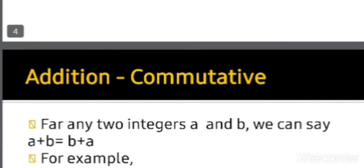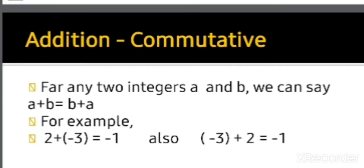Now commutative property. For any two integers a and b, a plus b equals b plus a. For example, let a equal 2 and b equal minus 3. Then a plus b equals minus 1, and b plus a, which is minus 3 plus 2, also equals minus 1. Since both give the same answer, addition is commutative.